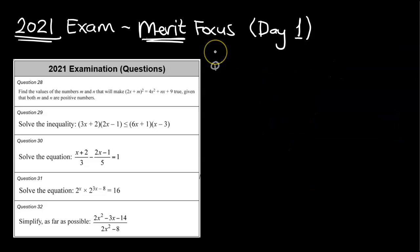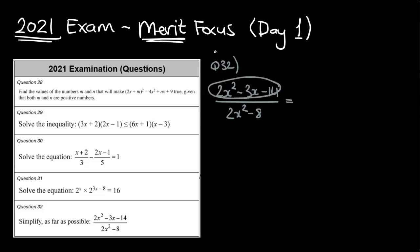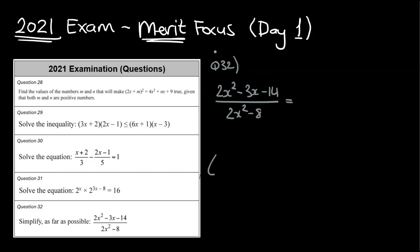Our final question, number 32: simplify this expression. It's a bit different because we've been doing solving. We've got (2x² − 3x − 14) / (2x² − 8). This is going to be quite messy — the numerator will need the grouping method, and the denominator has a common factor.